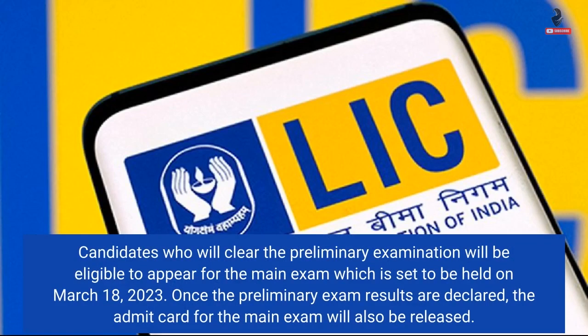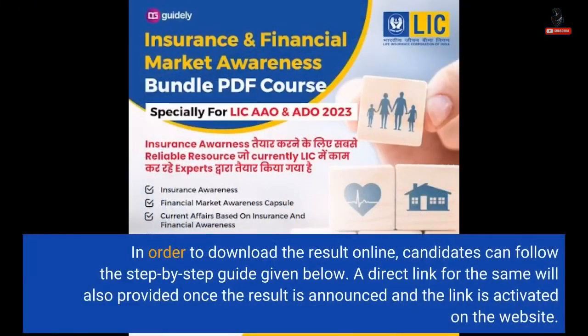Once the preliminary exam results are declared, the admit card for the main exam will also be released. In order to download the result online, candidates can follow the step-by-step guide given below. A direct link will also be provided once the result is announced and the link is activated on the website.